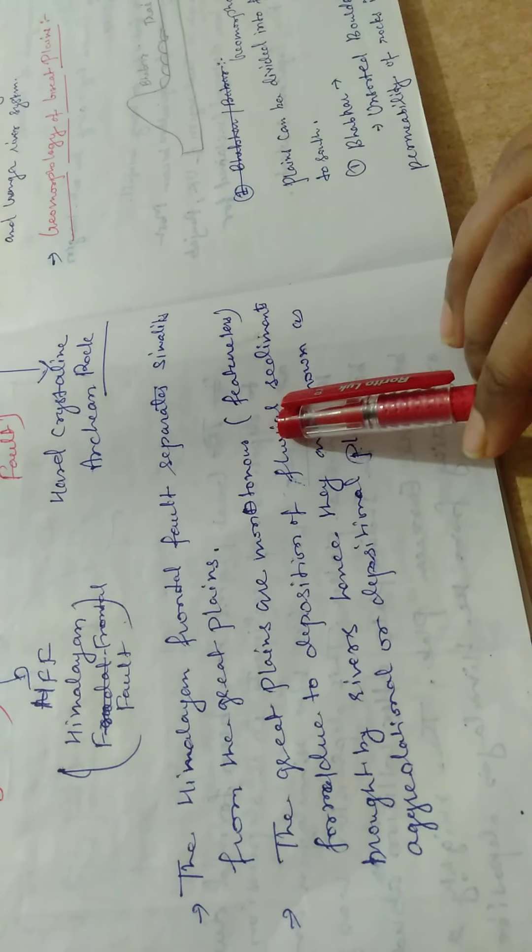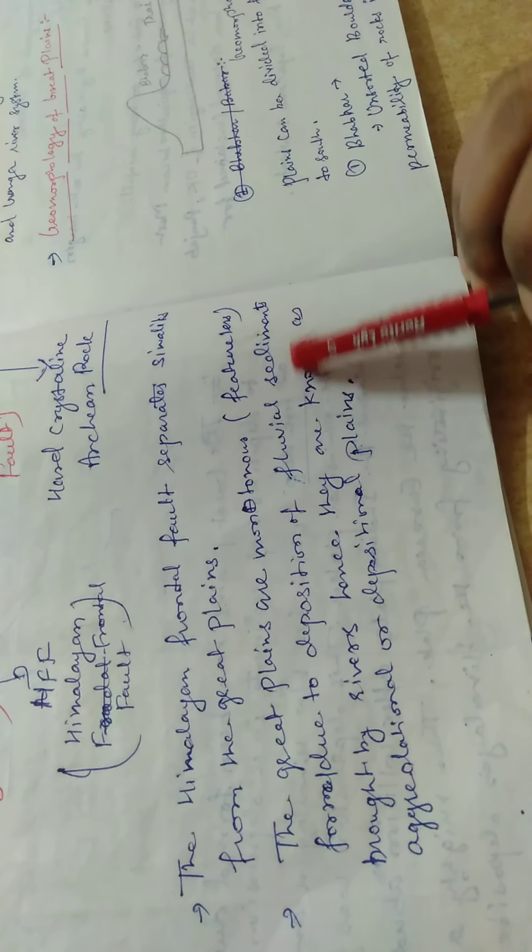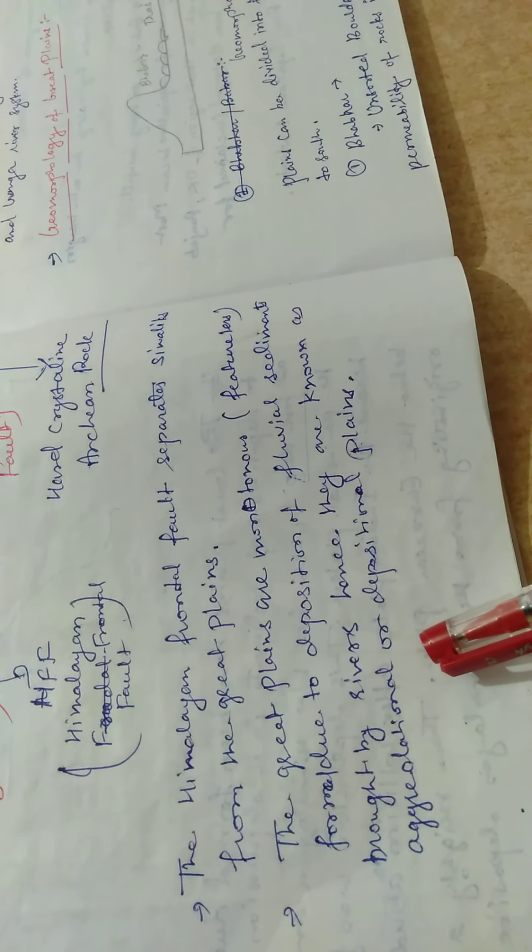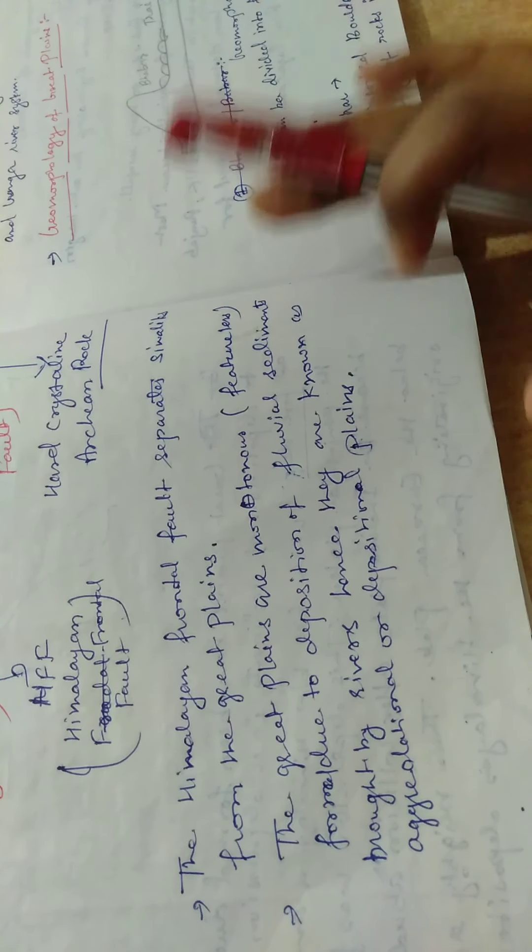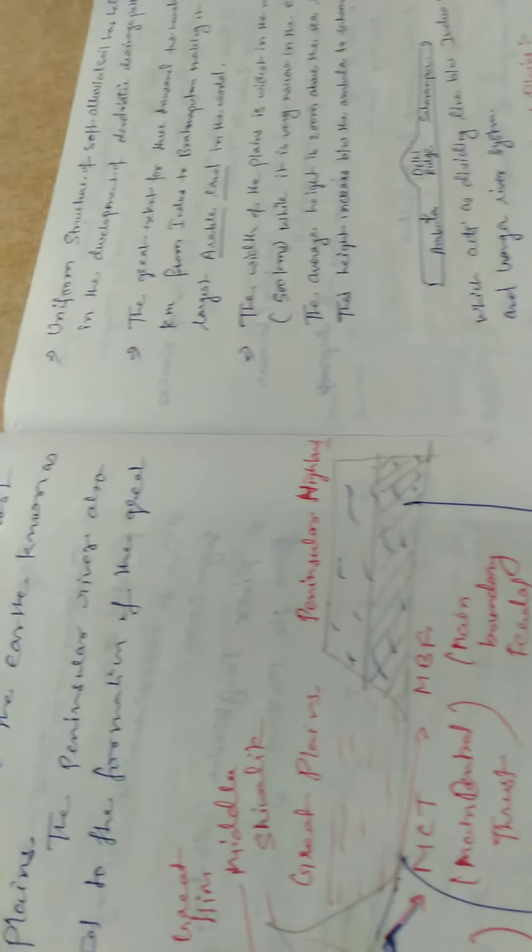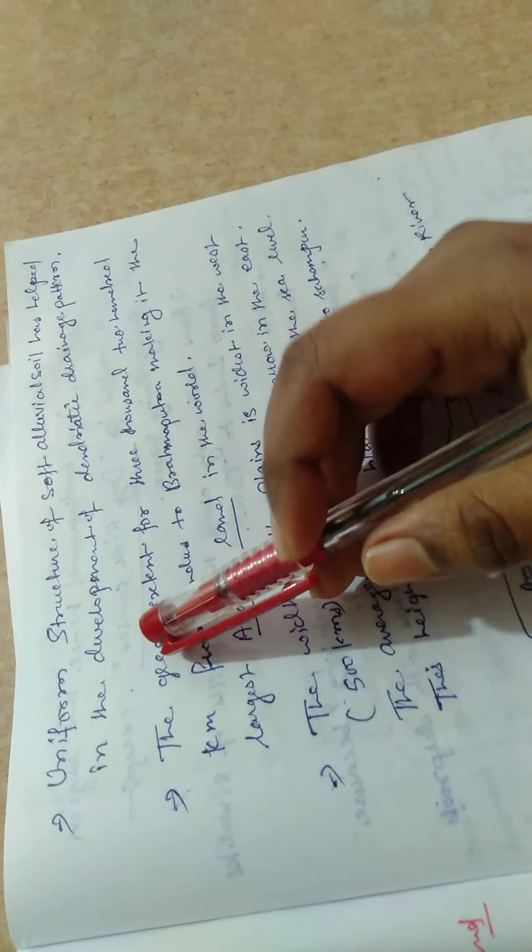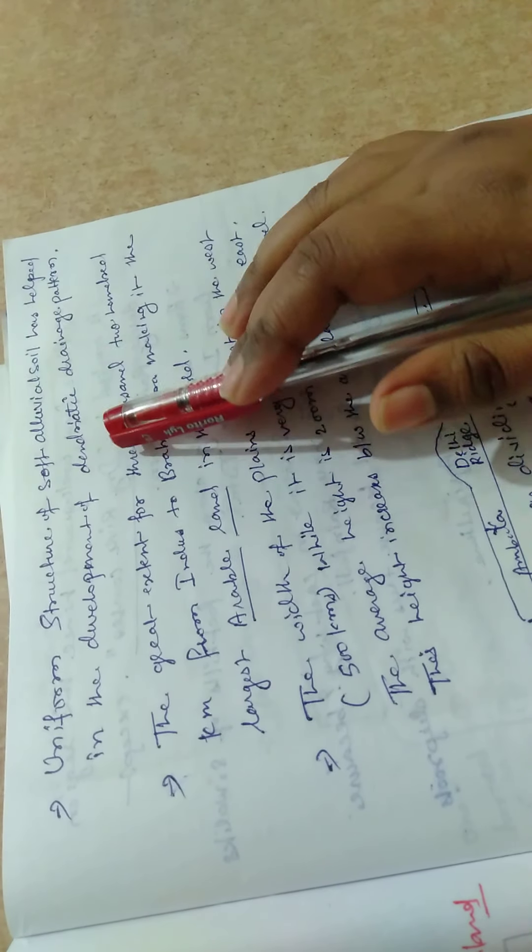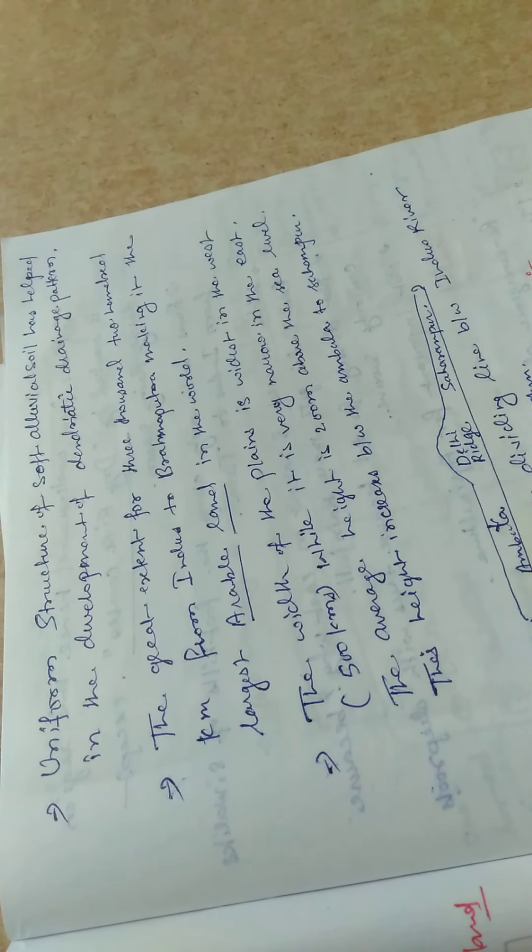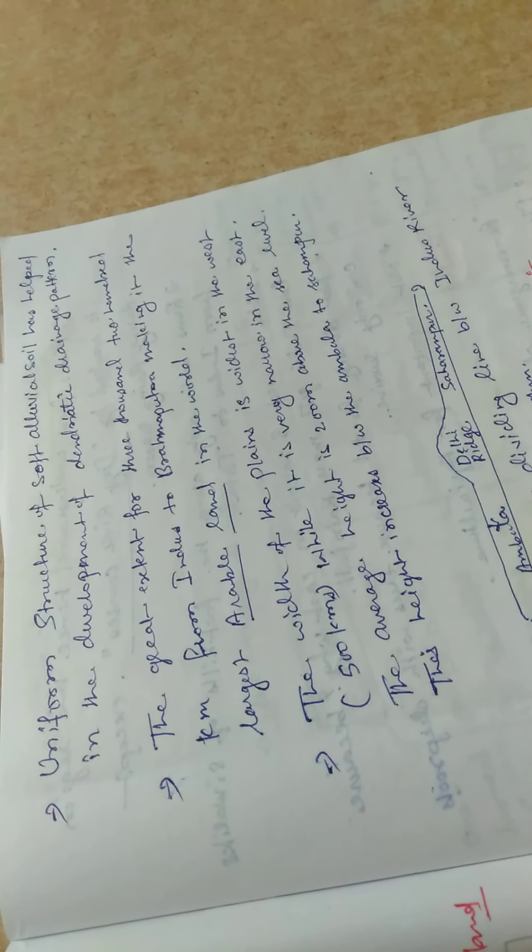The Great Plains are monotonous, featureless, formed due to deposition of fluvial sediment brought by rivers. Hence, they are known as aggradational depositional plains. Uniform structure of soft alluvial soil has helped in the development of dendritic drainage pattern.